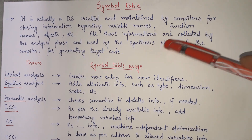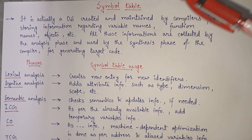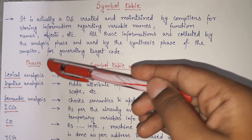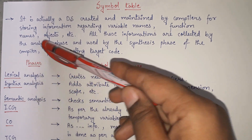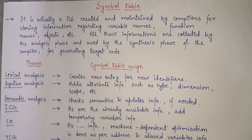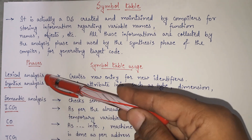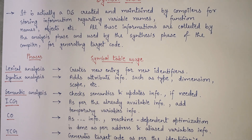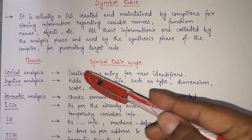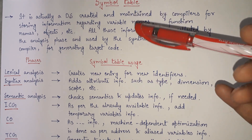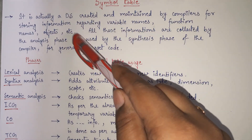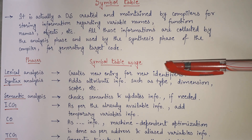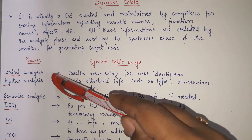The first three phases insert data into the symbol table and the later three phases use that inserted information to generate the target code. Now let's see what each phase will do with the symbol table. The lexical analysis phase will create a new entry for every new identifier it encounters. Then, syntax analysis will add attribute information such as type, dimension, scope, etc. — these informations will be inserted by syntax analysis into the entries created by lexical analysis.